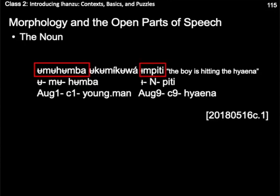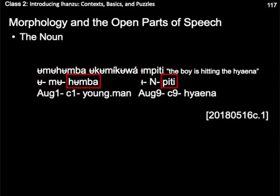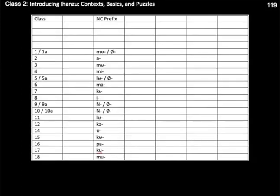Returning now to the nouns at hand, when we provide the interlinearization as I currently understand it, we can see that both nouns in this case are composed of three separate morphemes. This includes the stem, which contains some but not all of the lexical identity of the noun, as well as two other morphemes. We'll start our analysis from the morpheme closest to the stem — the class marker. Class is a system of nominal categorization used by the Bantu languages, somewhat similar to but distinct from gender. We can see that the noun meaning 'young man' and the noun meaning 'hyena' are members of two different noun classes, in that they take two distinct noun class prefixes. In all, according to the traditional Bantuist numbering system, Ihanzu has 17 noun classes, the classes and the corresponding noun class prefixes given here in our table.